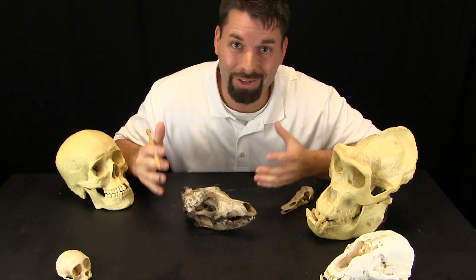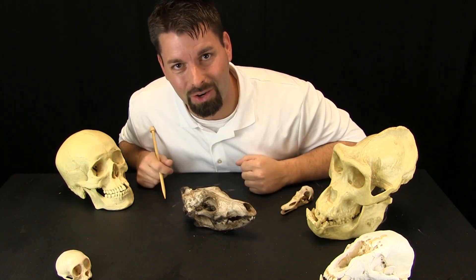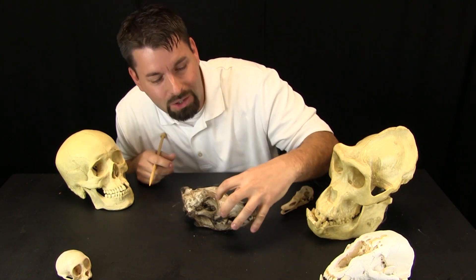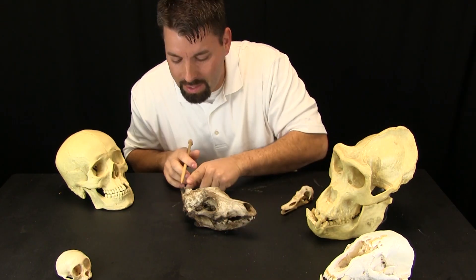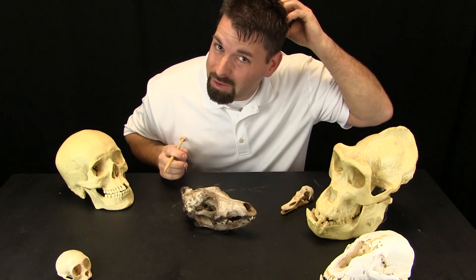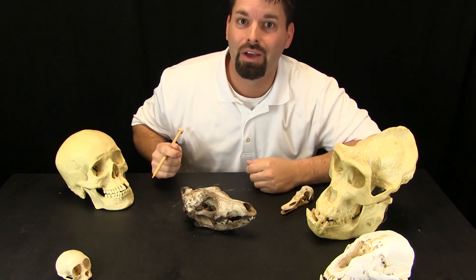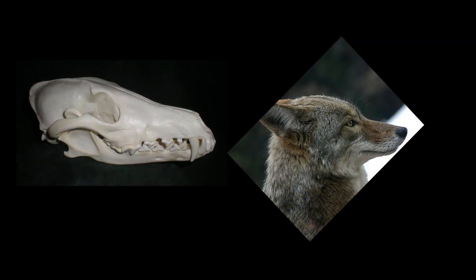Another skull, another animal. What does this skull look like? Well it has a long nose, big teeth, and a bump of bone on the back of its skull. Take a look at this side by side comparison to find out that this animal is a coyote.